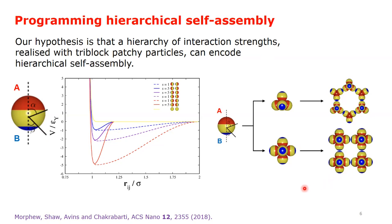both of which encode a hierarchy of interaction strengths. We find that a wider patch width for the stronger patch shown in red and the longer range for the patch-patch interactions favor the formation of octahedra over tetrahedra as expected.